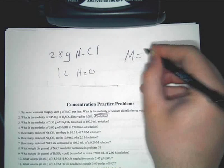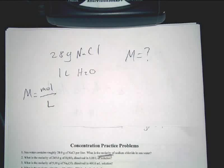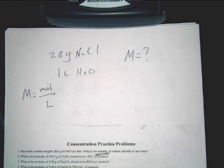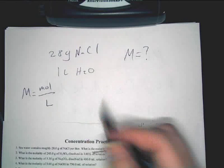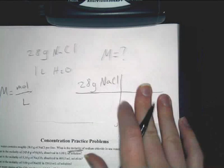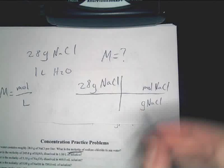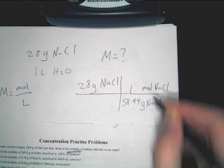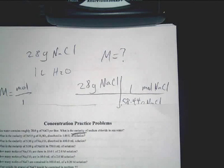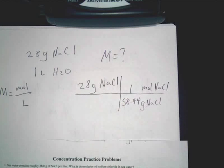Now, it says, specifically, what is molarity? We know that molarity is equal to moles over liters. So, yes, what we need to do, we know we have one liter of water, so we can put that on the bottom. The only thing we have to do is convert our grams to moles. So, 28 grams of NaCl. You convert grams of NaCl to moles of NaCl.